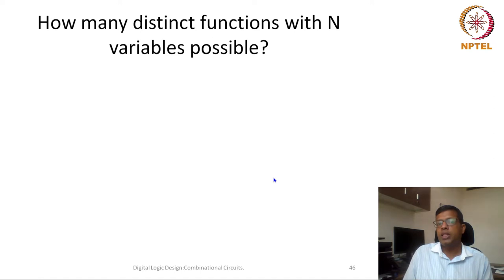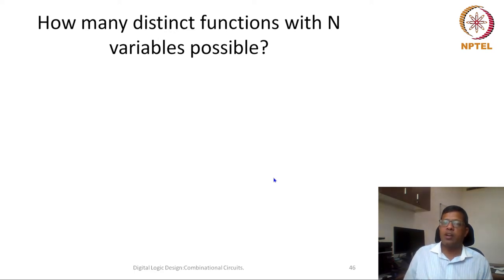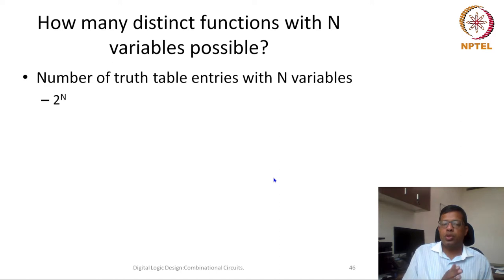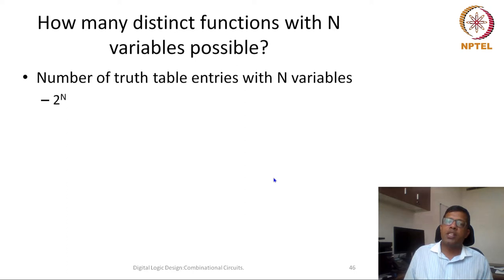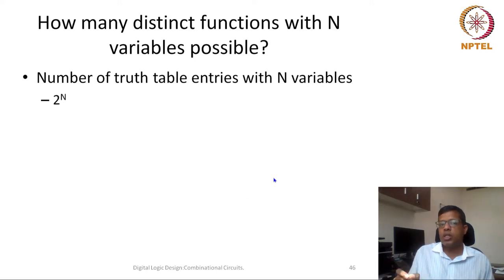To understand this, if there is a function with n variables, we can design all of these functions using a truth table. My truth table will have 2^n entries. This is my starting point of thinking: a function I want to design will have 2^n entries. A Boolean function in standard form can be represented as sum of minterms or product of maxterms. Let us consider the first one — sum of minterms. Each entry in this truth table represents one minterm.